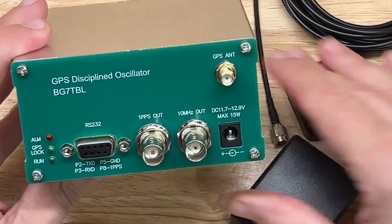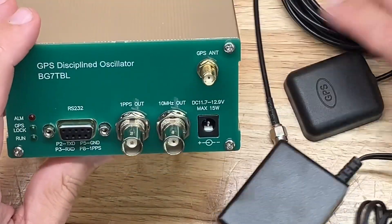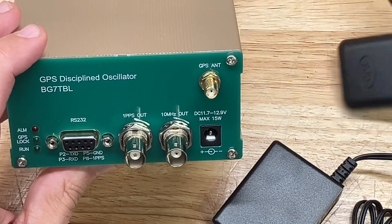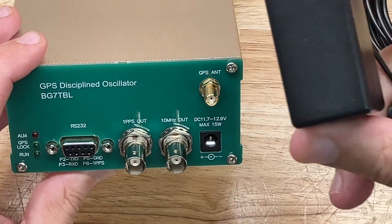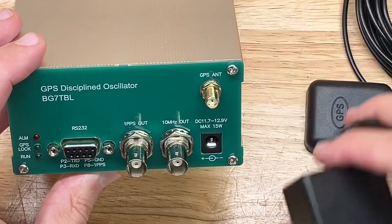Okay. So there's the GPSDO. This unit comes with a GPS antenna with a pretty long cable and it comes with an external wall wart type 12 volt power supply.